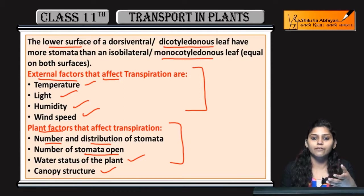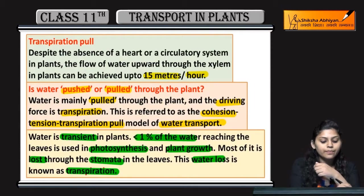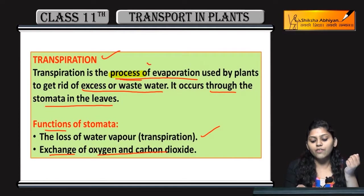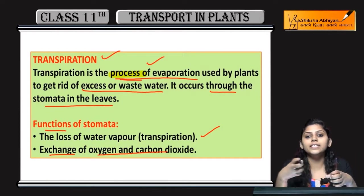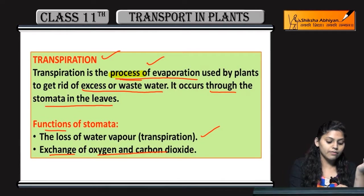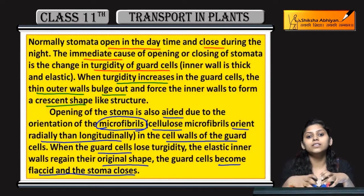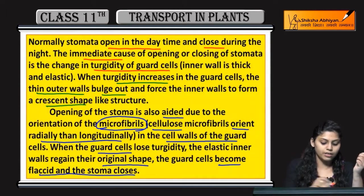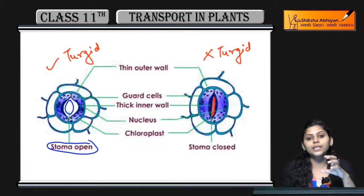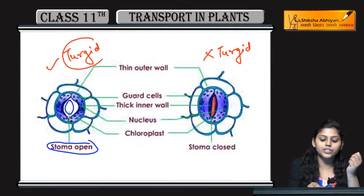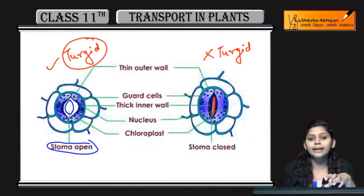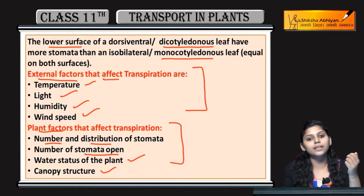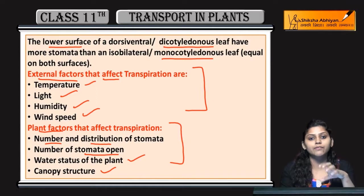Transpiration humne kya dekha — process of evaporation jiski wajah se excess water lose hota hai. Stomata ka function kya hai — excess jo bhi waste hai usse remove karna and gaseous exchange karna. Jo opening and closing of stomata hai woh depend karti hai turgidity of guard cells and microfibrils pe. Kuch external factors and plant factors bhi transpiration ko affect karte hain.